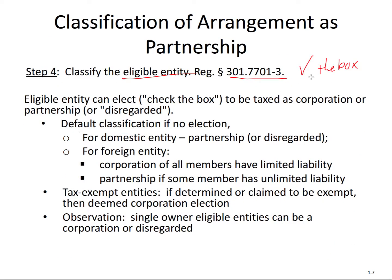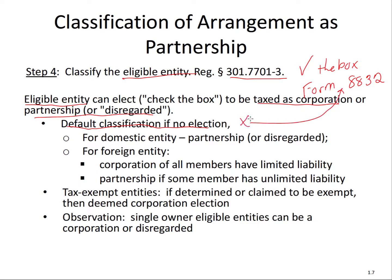Check-the-box uses Form 8832 — look that up sometime, it's a short but interesting form. The reason we call it check-the-box is because you actually check a box on the form. This eligible entity that's not a per se corporation can be taxed as a corporation, partnership, or disregarded entity depending on how many owners. The default classification for a domestic entity — meaning if you do not file Form 8832 — is that you're a partnership or disregarded entity, and that's important because partnerships or disregarded entities have one level of taxation.